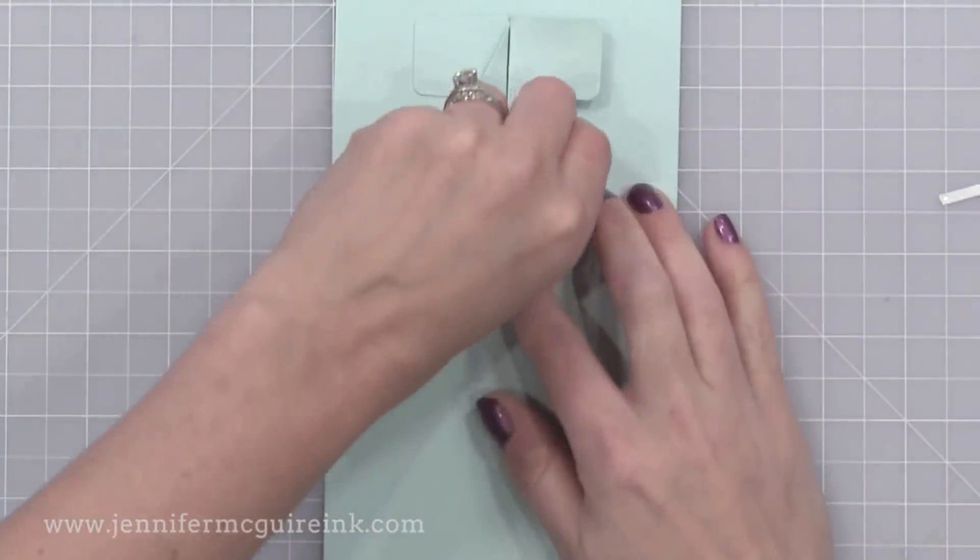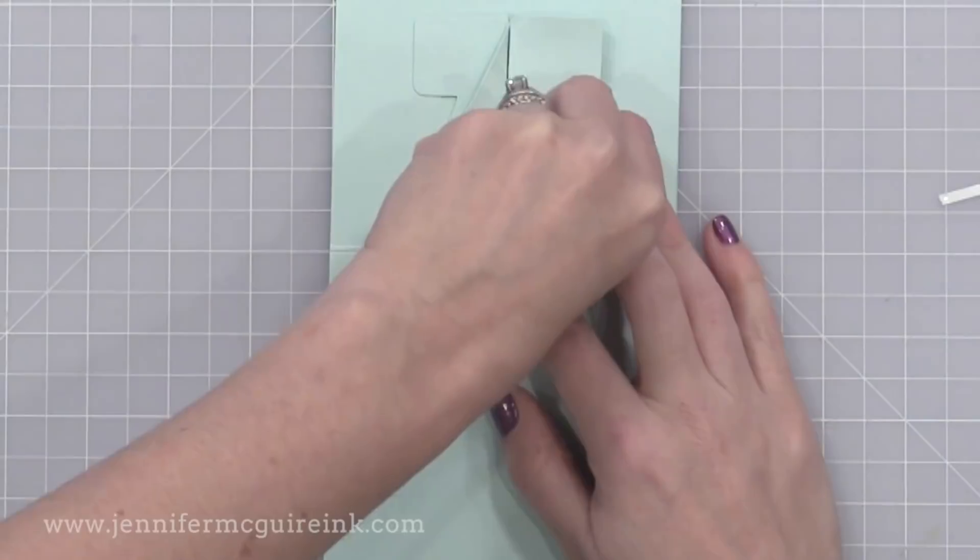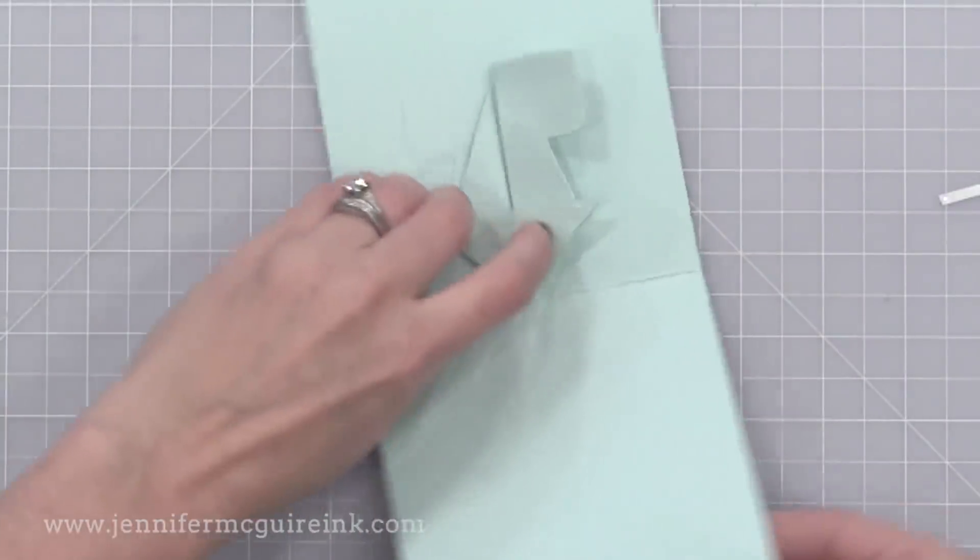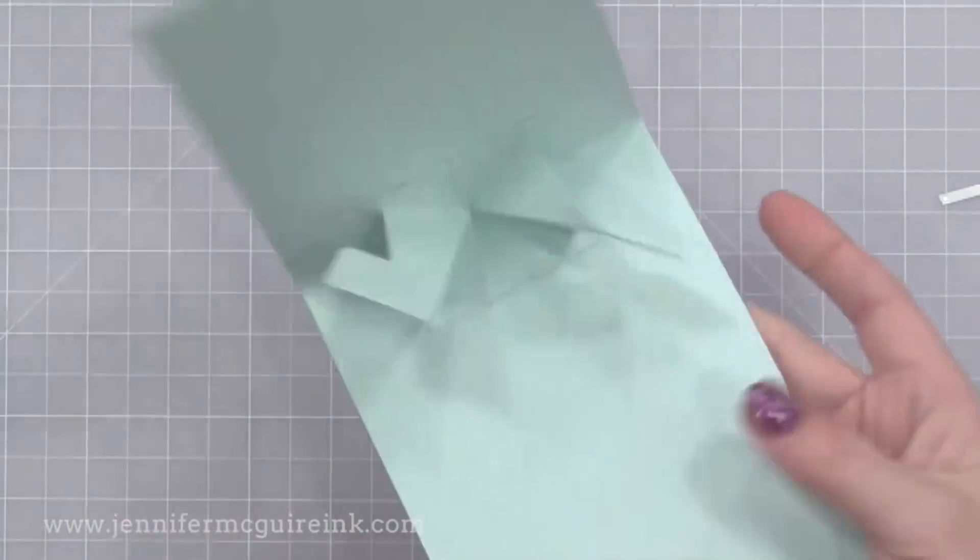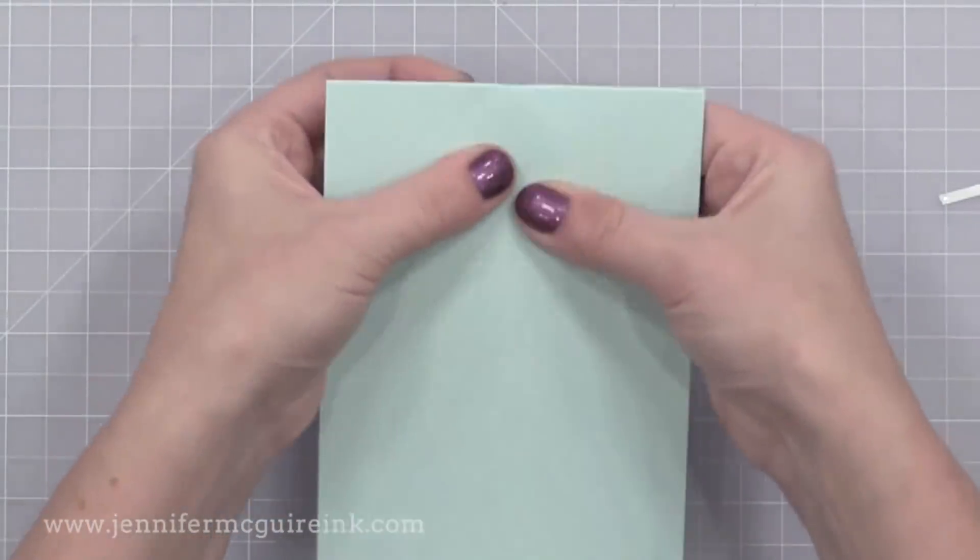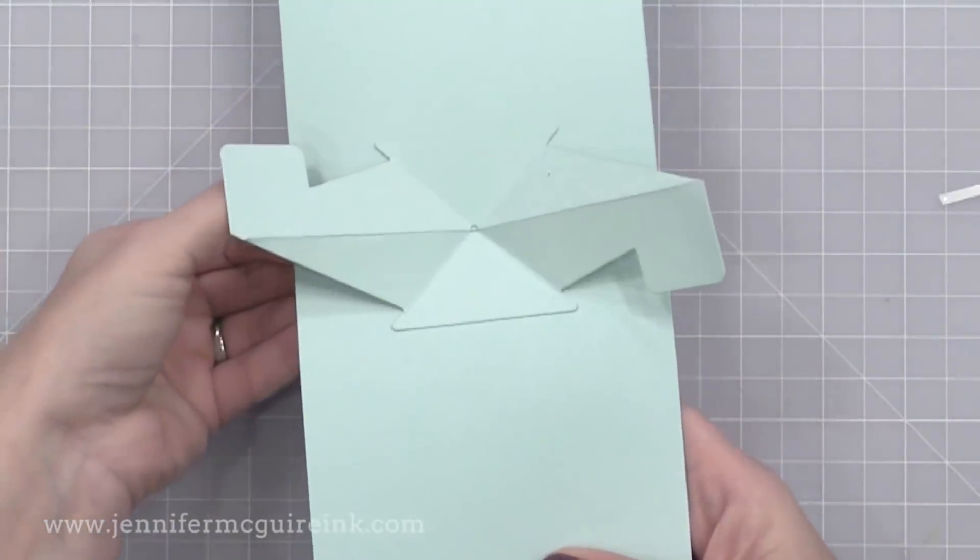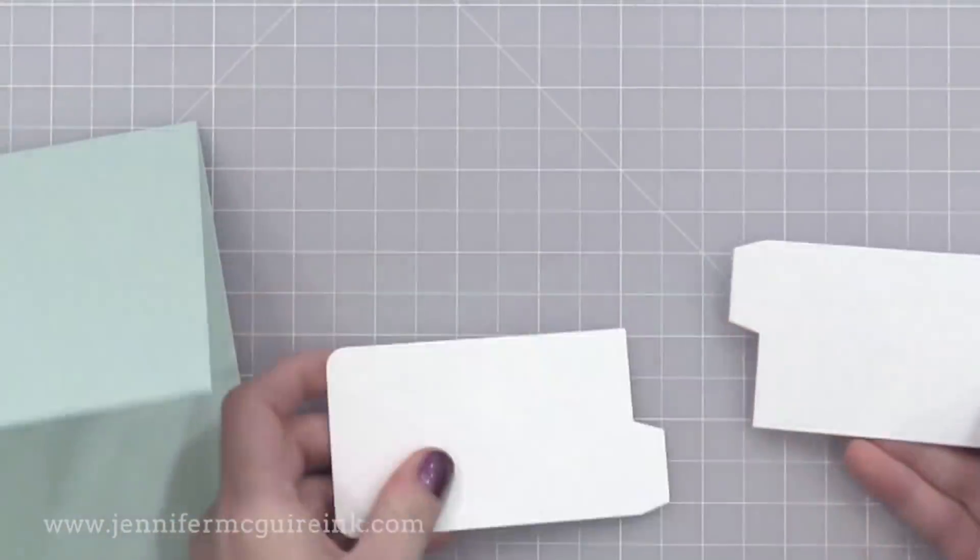So I'll press that down. Now I'm going to remove the release paper from the other triangle. Once I have that all removed I can just close the card onto it and our mechanism is added to the card. It looks a little funny right now but as soon as we add the banner to it it will look fantastic and pop up nicely.